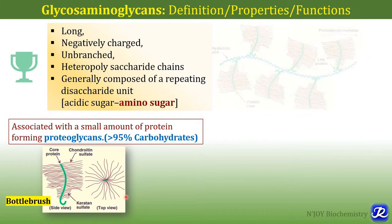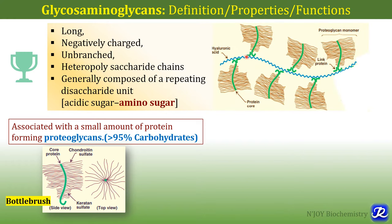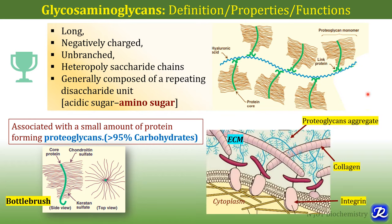These proteoglycan monomers are further linked with hyaluronic acid. The blue one is hyaluronic acid, but the attachment of the proteoglycan monomer to hyaluronic acid is non-covalent — attached non-covalently with the help of link protein. This is the structure of a proteoglycan aggregate. It is an important constituent of the extracellular matrix along with collagen, elastin and other important proteins.